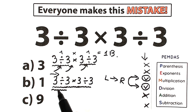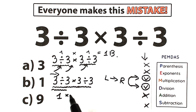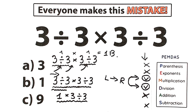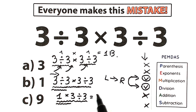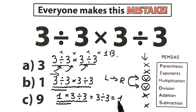The first sign from left to right is division, so 3 divided by 3 equals 1. We still have times 3 and divided by 3 remaining. Once more we have multiplication and division — the first sign from left to right is multiplication, so 1 times 3 equals 3. Then we do the last step: 3 divided by 3 equals 1. This is option B — the same option B.